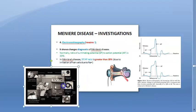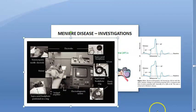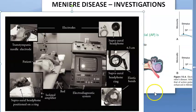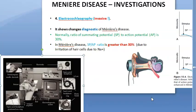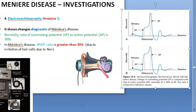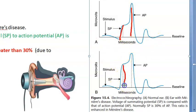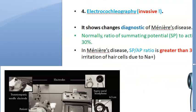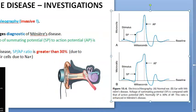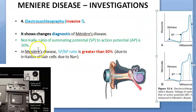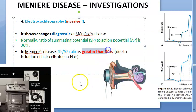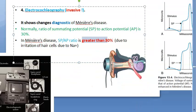In the electrocochleography graph, the normal SP/AP ratio is 30%. In Meniere's disease, summation potential becomes elevated so the SP/AP ratio exceeds 30%. This finding is diagnostic of Meniere's disease and is an important graph to be able to draw in an examination.